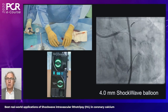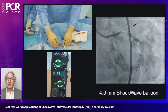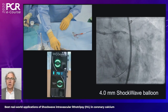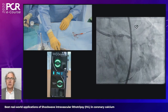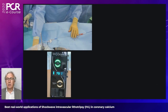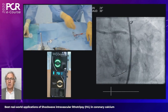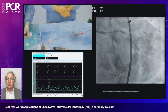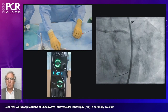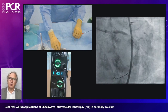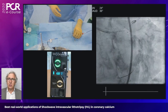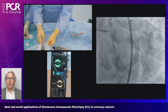IVUS is very useful for understanding calcium distribution, identifying proper landing zones, and making accurate vessel size measurements. We then used a 4mm shockwave balloon to treat the heavily calcified circumflex artery and the left main bifurcation, again being very cautious. We had contralateral vessel access in case we needed an intra-aortic balloon pump. Given good left ventricular function, we managed without additional support, and there were no deep episodes of hypotension.